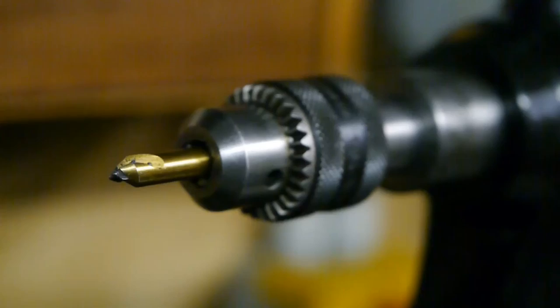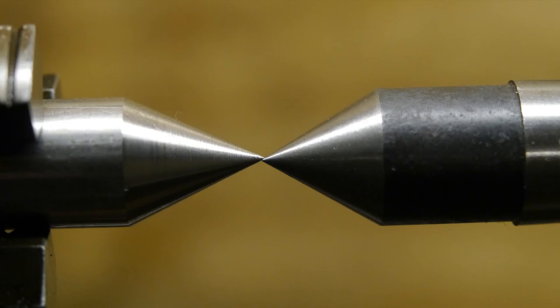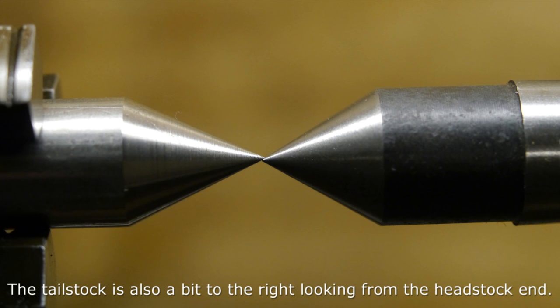So those are the changes I made so far, and one more thing. Well it had to happen at some point but I broke my first center drill. It broke while I was drilling some stainless steel, and it turned out as you can see from this picture that the tailstock is a bit too low. I don't know what's causing this, so that's something I will need to figure out at some point.